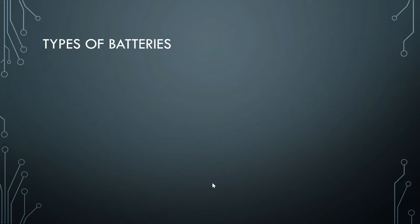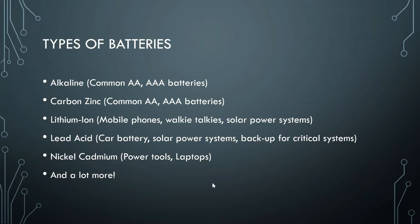So what are the common types of batteries? We have the alkaline, or the common AA batteries that we use at home. We mainly use them for powering up common household items such as flashlights, toys, and remote controllers.